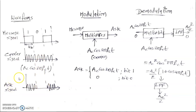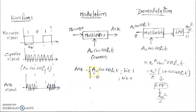The ASK signal is generated by multiplying the message signal with the carrier ac·cos(2πfc·t). The resulting ASK signal is: ac·cos(2πfc·t) when the message bit is 1, and 0 when the message bit is 0. In the channel, we are transmitting either ac·cos(2πfc·t) or 0. At the receiver side, the receiver receives either ac·cos(2πfc·t) or 0.